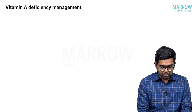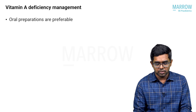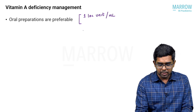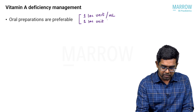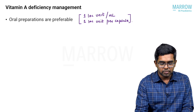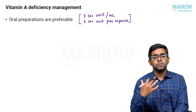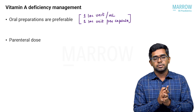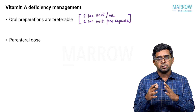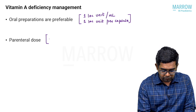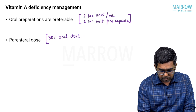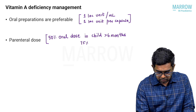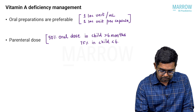The mode of treatment should be oral — oral preparations are preferable in most cases. Suspensions contain 1 lakh units per ml and capsules also contain 1 lakh units per capsule. In cases of severe vomiting or malabsorption, parenteral preparations can be given. The parenteral dose should be 50% of the oral dose in children more than 6 months of age, and 75% of the oral dose in children less than 6 months of age.